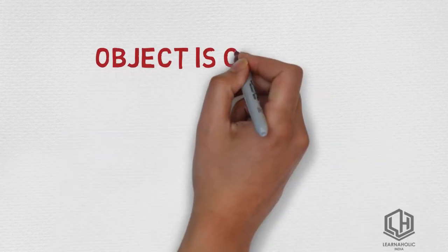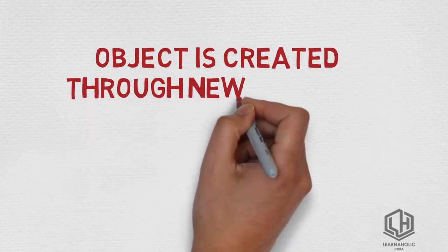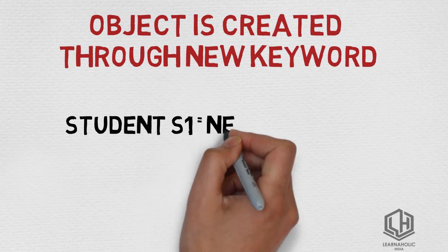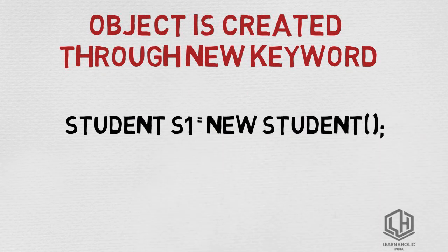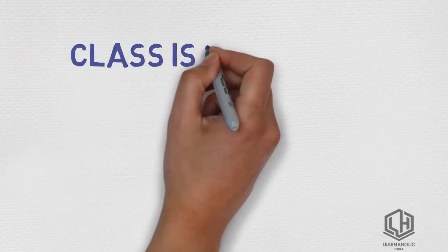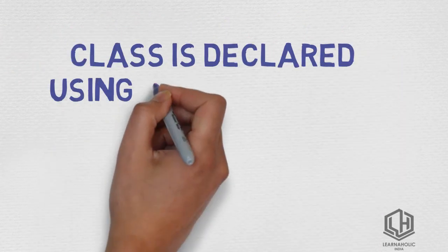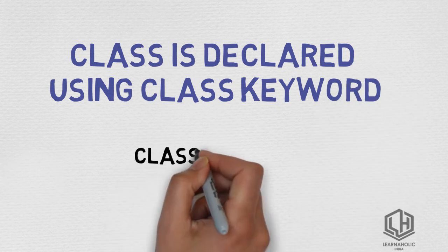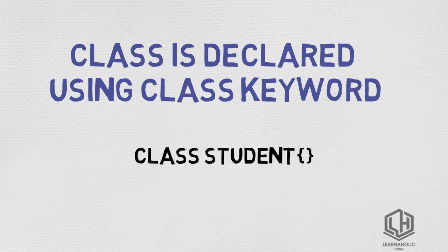Fourth point: object is created through the new keyword mainly. For example, Student s1 = new Student(). Whereas class is declared using the class keyword — for example, class Student.